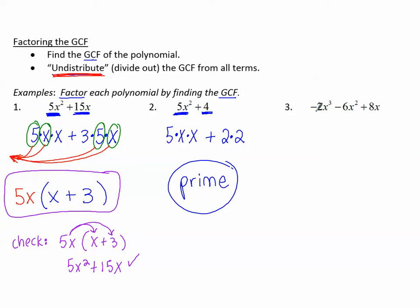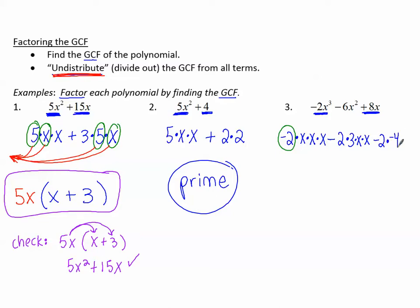Number 3: negative 2x cubed. This can be written as negative 2 times x times x times x — three x's for x cubed. Minus 6x squared: I want a common factor from all of these. I see a 2 here, and 2 can go into 6, so that can be written as negative 2 times 3. x squared is x times x. Positive 8x: when I see a negative number as a leading coefficient, I want to take out the negative as well. So I'm going to factor negative 8 as negative 2 times negative 4 times x.